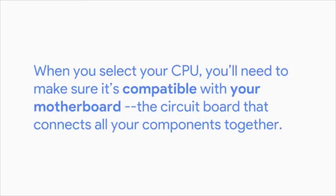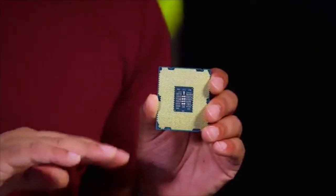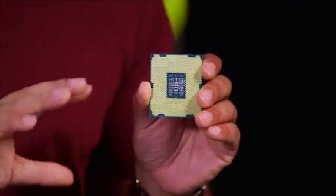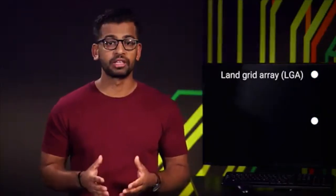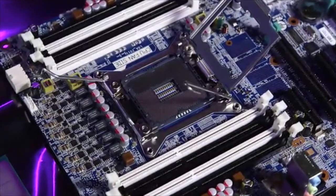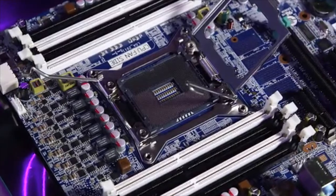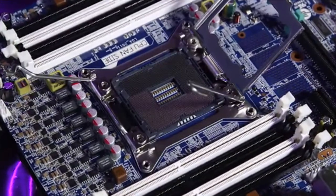When you select your CPU, you'll need to make sure it's compatible with your motherboard — the circuit board that connects all your components together. You can't just buy a bunch of parts and expect them to work together. There are different ways CPUs fit on motherboards using different sockets. Your CPU might have lots of tiny pins that either stick out or have contact points that look like dots. There are currently two major types of CPU sockets: LGA (land grid array) and PGA (pin grid array). In an LGA socket, there are pins that stick out of the motherboard. The socket size may vary, so always make sure your CPU and socket are compatible.